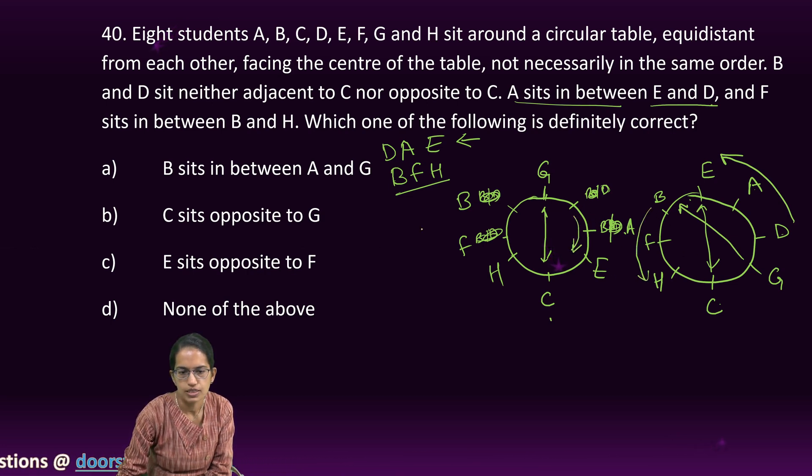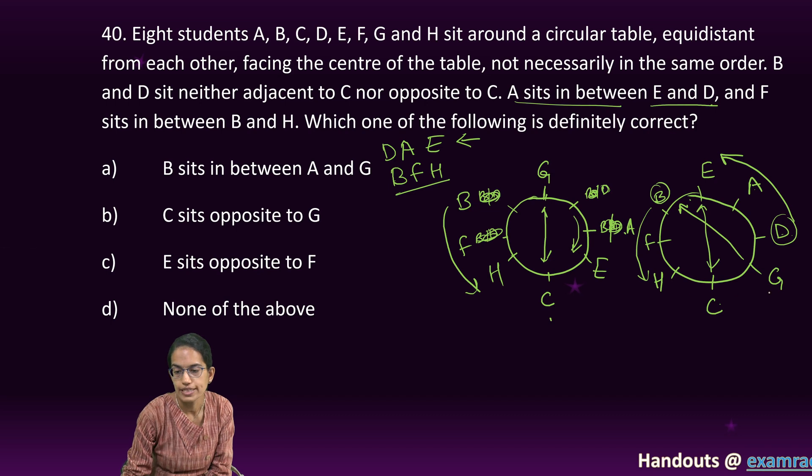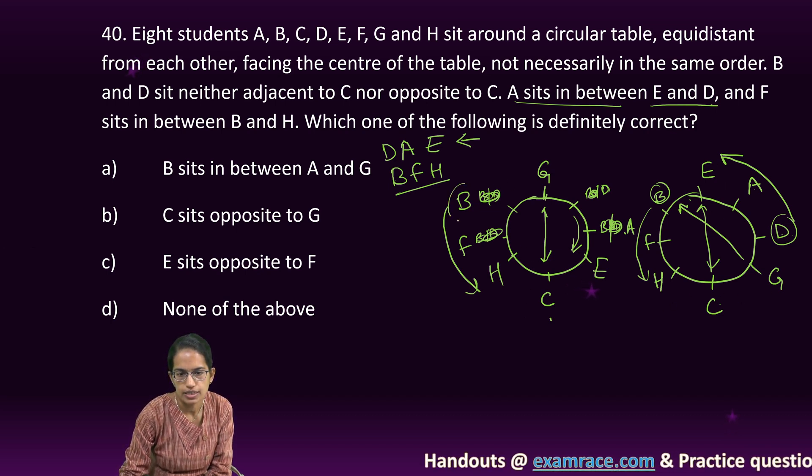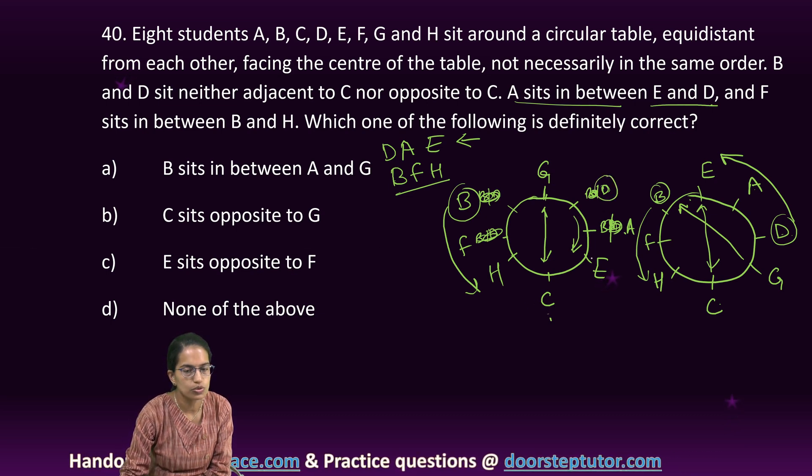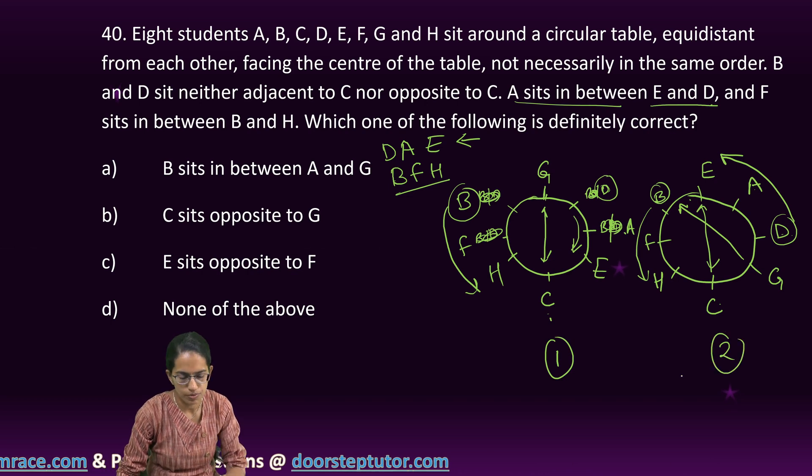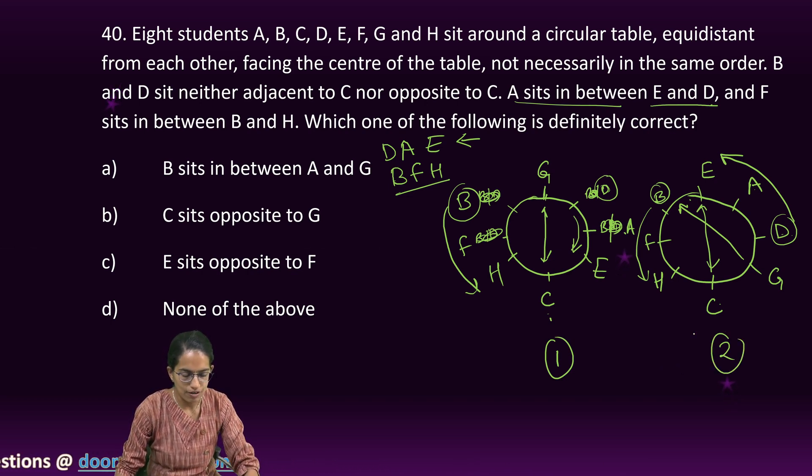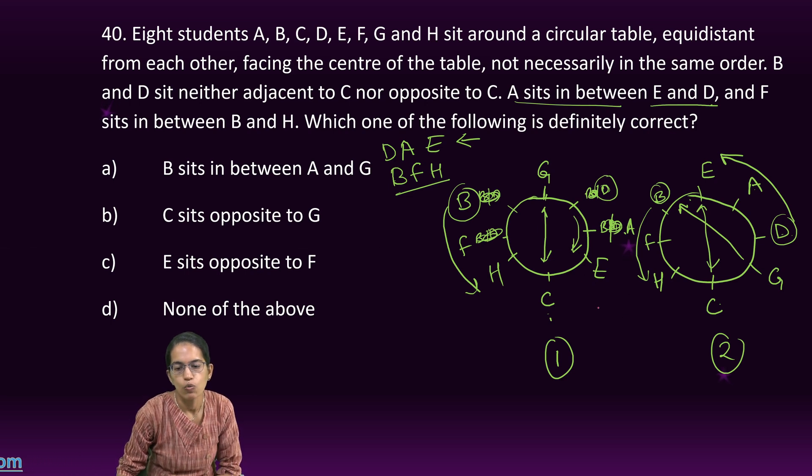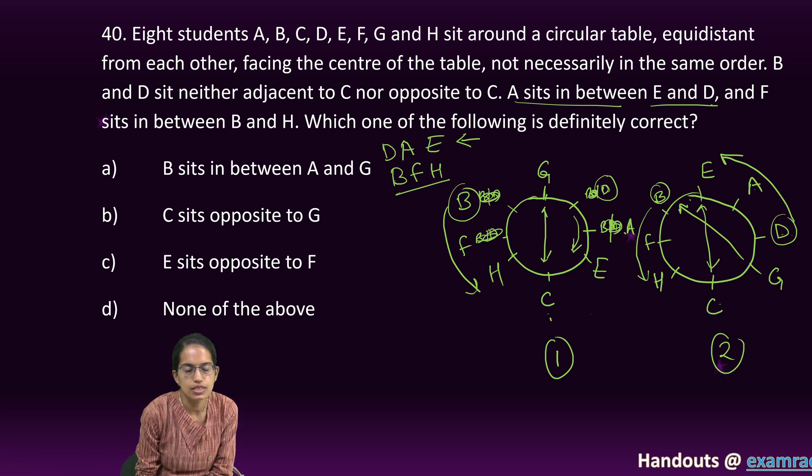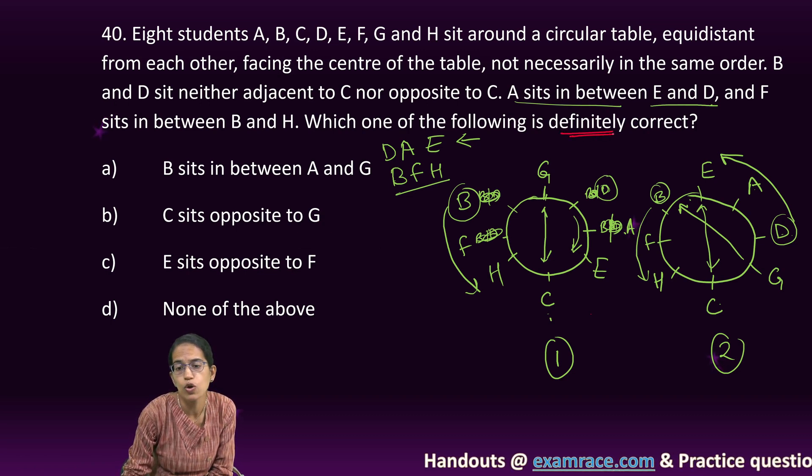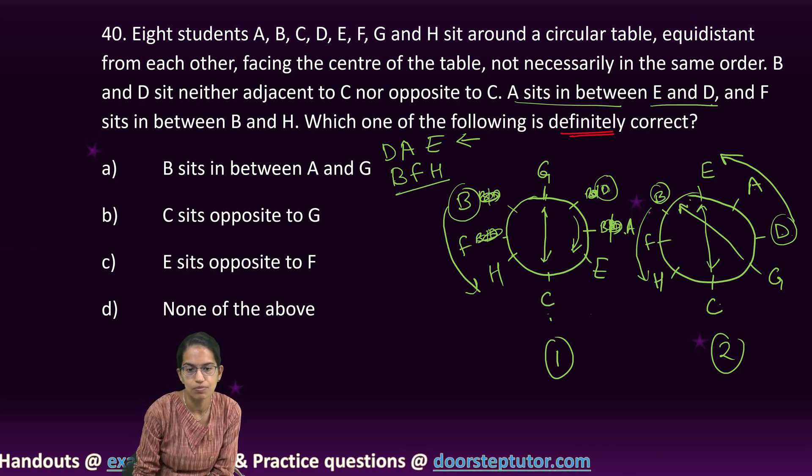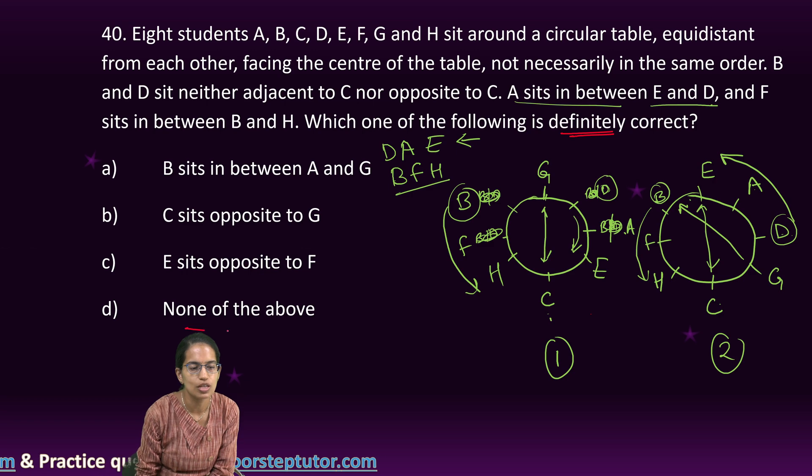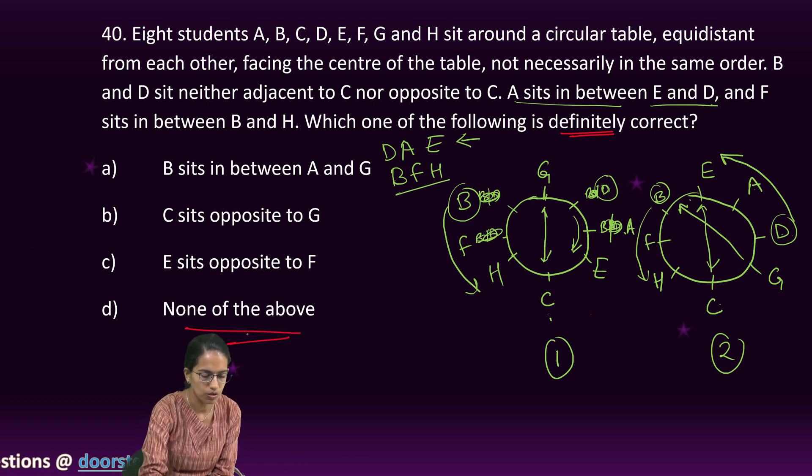In both cases, the conditions are satisfied. From the given statement, C sits opposite to G is correct. But the question says which of the following is definitely correct. Since there can be two different arrangements, none of these could be definitely correct. None of these would be the right option.